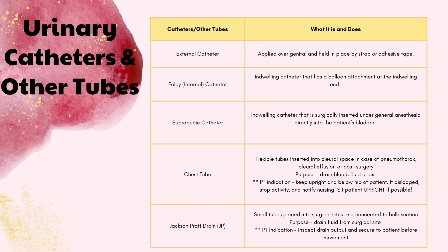That is why when you have a patient with a Foley we are very careful, because it is very painful for the patient if it gets tugged or pulled too hard because of that balloon attachment. We also want to keep it below the genitalia because it works with gravity to get the urine out. Next we have the suprapubic catheter, which is also an indwelling catheter but is surgically inserted directly into the patient's bladder.